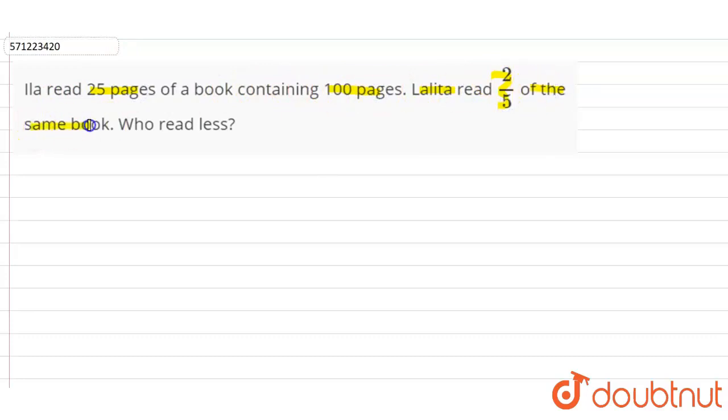So Ila reads 25 pages out of 100 pages, and Lalita reads how many? Two-fifths, two-fifths of the same book.